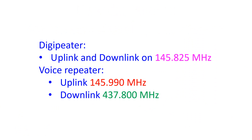Currently there are two active repeaters on the International Space Station. One is the digipeater with uplink on 145.825 MHz and downlink on the same frequency. The other one is the voice repeater with uplink on 145.990 MHz and downlink on 437.800 MHz.